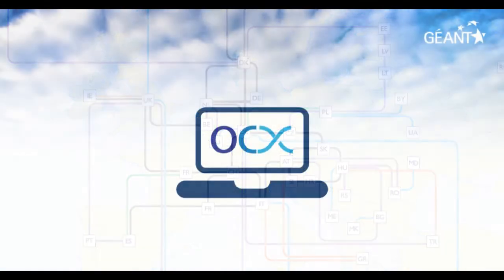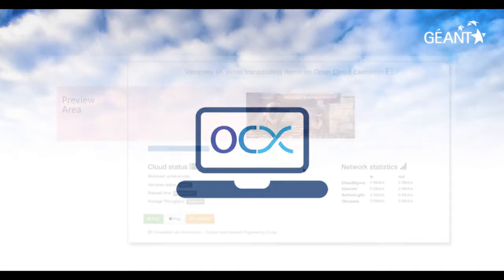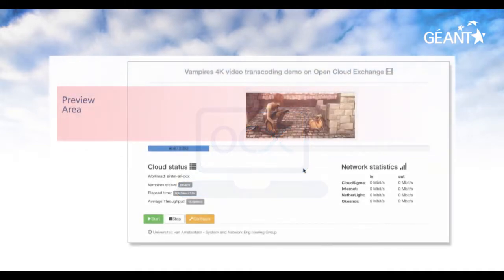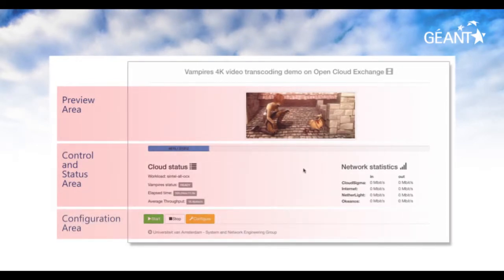The web interface to OCX has three main areas: the preview area at the top, the control and status area in the middle, and the configuration area at the bottom.